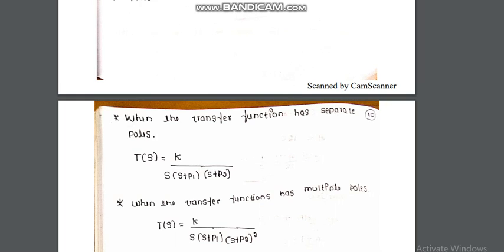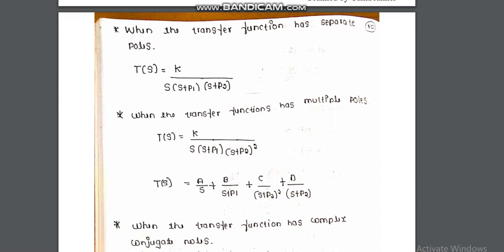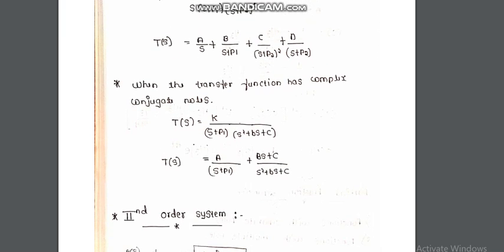The second type is functions with multiple poles: T(s) = k / [s(s+p1)(s+p2)²], written as A/s + B/(s+p1) + C/(s+p2)² + D/(s+p2). The third type is functions with complex conjugate poles: T(s) = k / [s(s+p1)(s²+bs+c)], written as A/(s+p1) + (Bs+C)/(s²+bs+c).